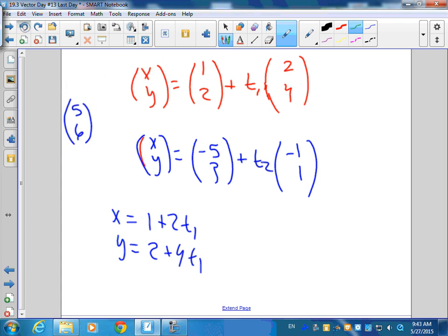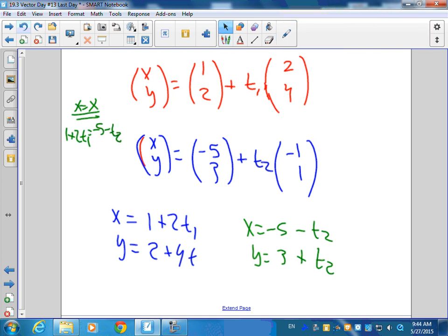So what you do with that is this is where we get our two parametrics, and we'll get x equal to -5 - t₂, and we get y is equal to 3 + t₂, and then we set x equal to x, and you'll get 1 + 2t₁ equal to -5 - t₂, and then you go y equal to y, and you're going to get 2 + 4t₁ equal to 3 + t₂, and now you have to do those two equations and two unknowns. Solve this one. Probably the easiest would be to solve for t₂ here, and then plug it in here and solve for t₁.